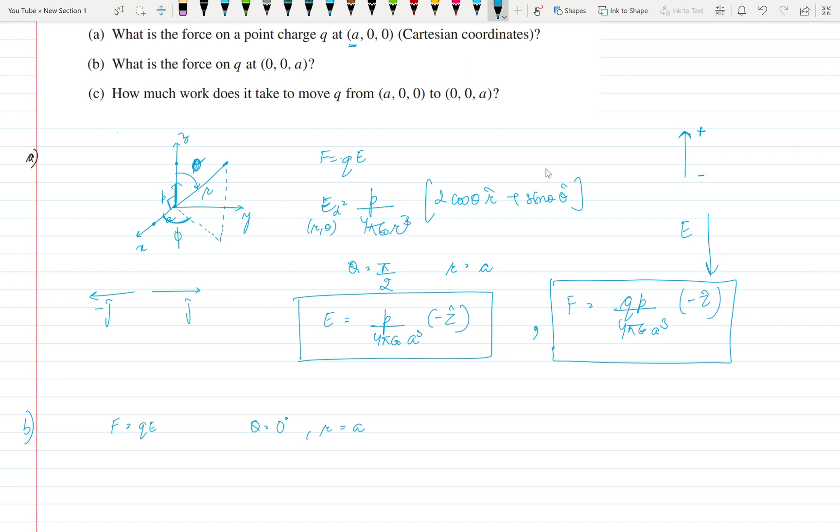So here, electric field: theta is 0, so sine becomes 0. So we get electric field as P upon 4 pi epsilon naught a cube, with a 2 here. Cos 0 becomes 1, and this is that electric field.